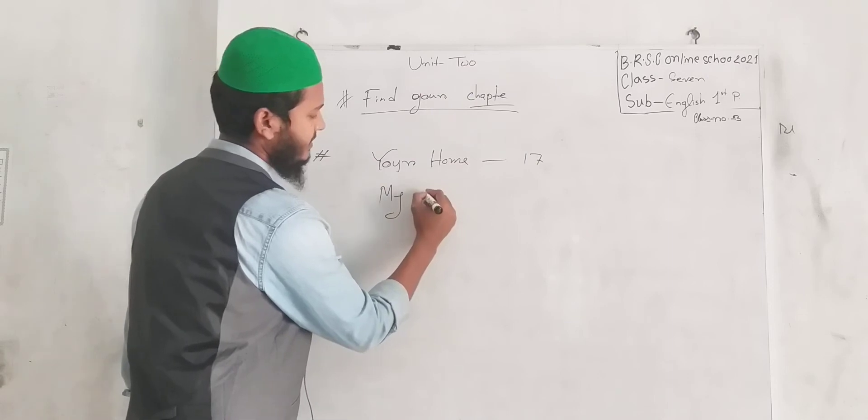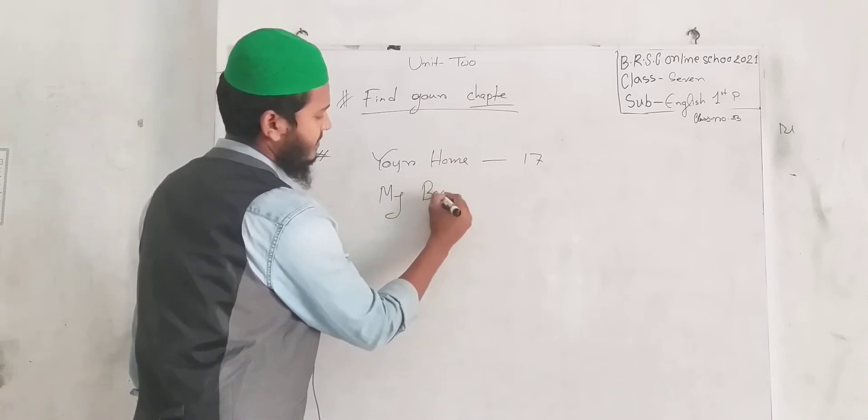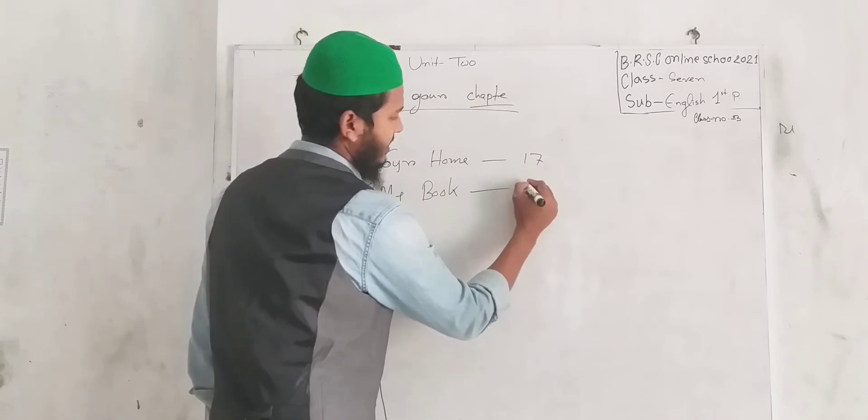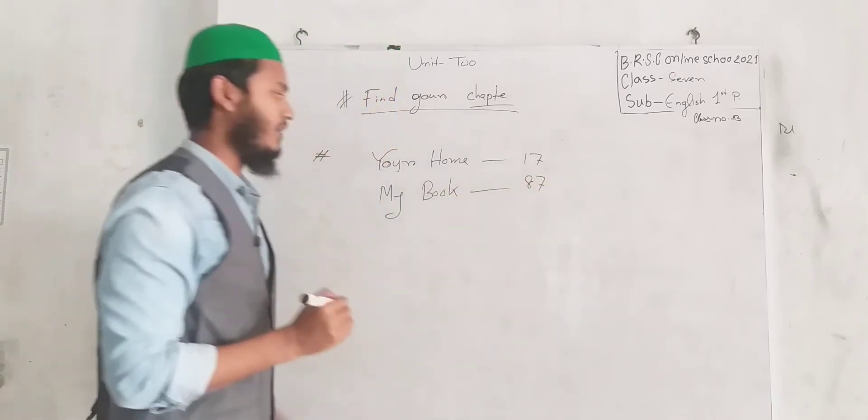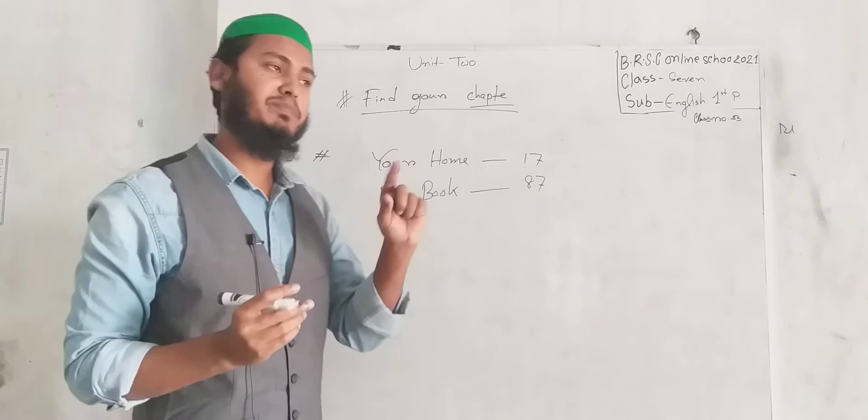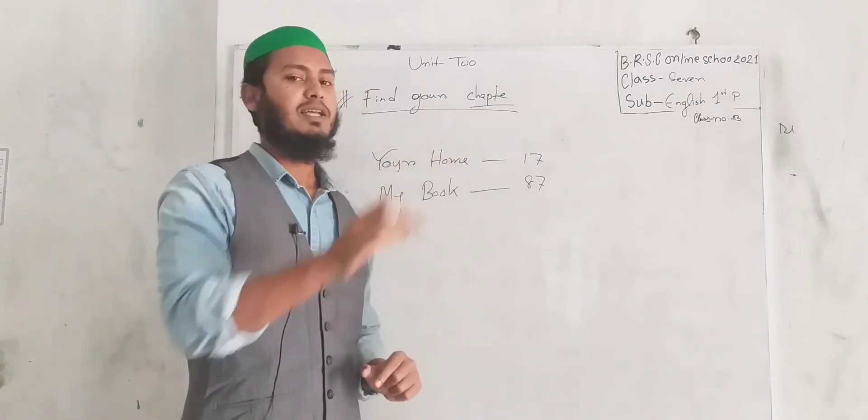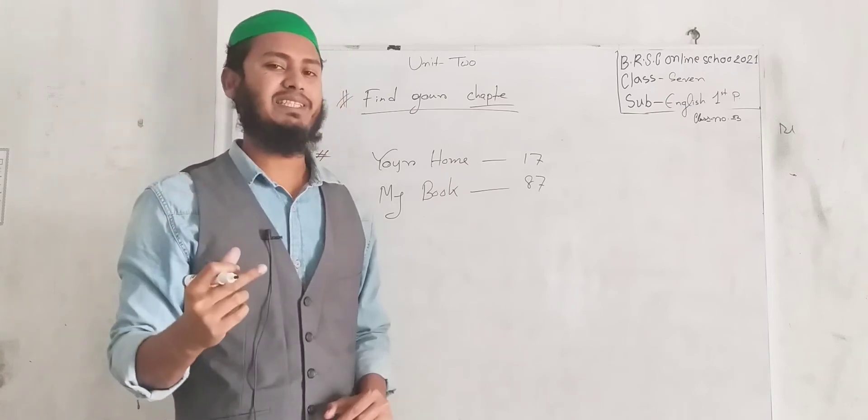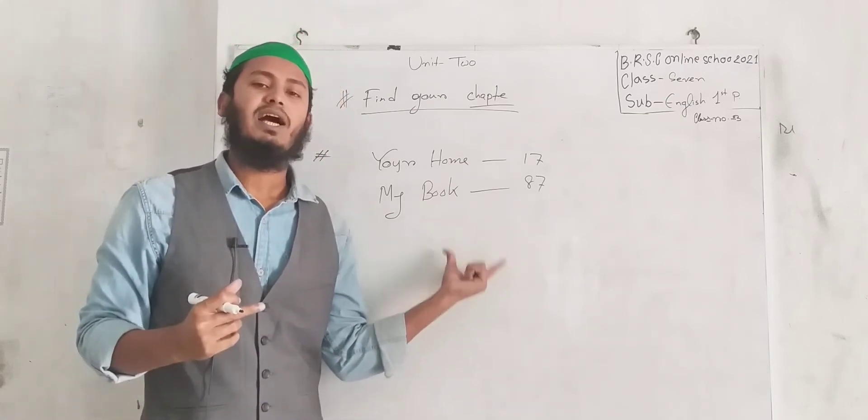My book, the page number is 87. This is the content of the first page. This is the content of which chapter is the page. In this lesson 2, we will learn this.